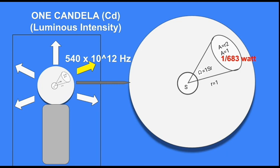1 steradian, the radius must be 1 unit and the area at the surface of the sphere must be 1 unit, that